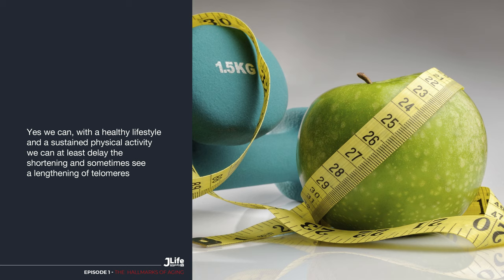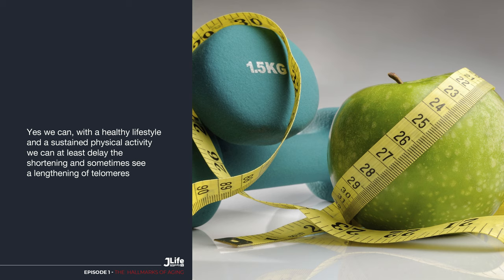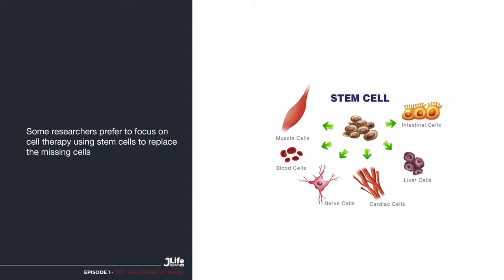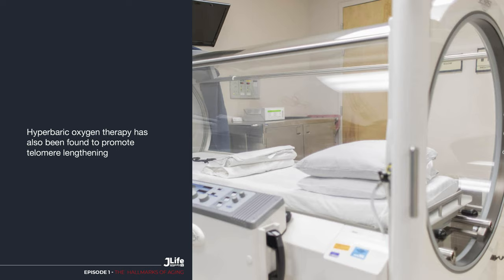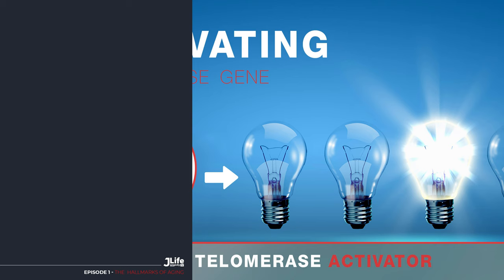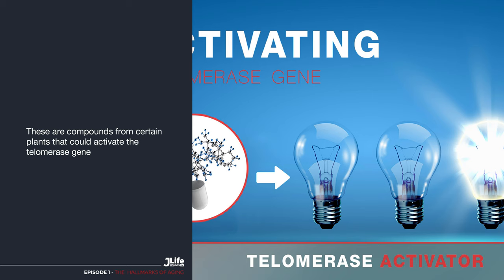Can we do something about it? Yes, we can. With a healthy lifestyle and sustained physical activity, we can at least delay the shortening and sometimes see a lengthening of telomeres. Some researchers prefer to focus on cell therapy using stem cells to replace the missing cells. Hyperbaric oxygen therapy has also been found to promote telomere lengthening. But it is mainly telomere activators that are being studied — derived from certain plants such as astragalus — that could activate the telomerase gene.